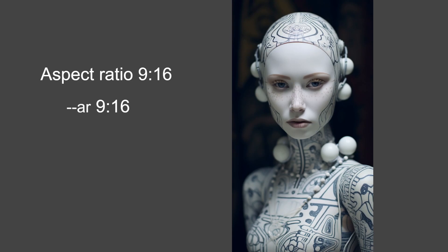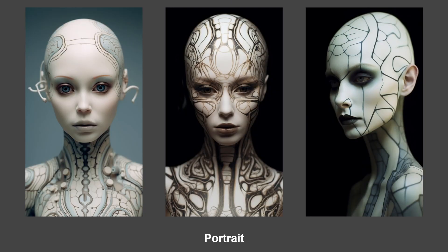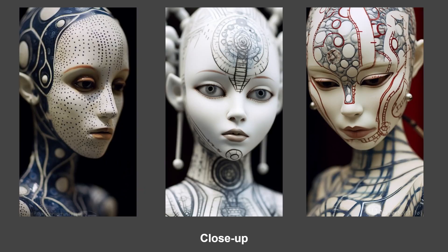Aspect ratio 9:16, the vertical one, is great for Instagram, TikTok, YouTube Shorts, wherever you want to do short reels. You could also do some cool effects on this — I'll have to do a video on that later. Portrait is similar to the 2:3, so you see more of the torso and also above her head. Close-up brings the face more close-up.